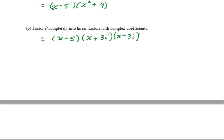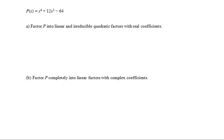One last example. Here we have P(x) equals x to the 4th plus 12x squared minus 64. This is quadratic in form. If we let our w equal x squared, we'll get P(x) equals w squared plus 12w minus 64.